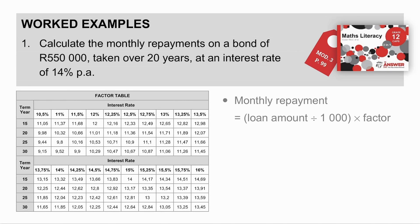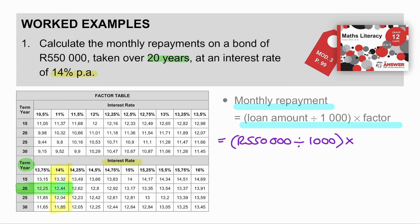Worked example: Calculate the monthly repayments on a bond of R550,000 taken over 20 years at an interest rate of 14% per annum. Using our formula — monthly repayment equals loan amount divided by 1,000 times by the factor — the interest rate is 14% per annum and the number of years is 20. Looking up the factor in the table gives us 12.44. So: R550,000 divided by 1,000 times 12.44 gives a monthly repayment of R6,842 per month.